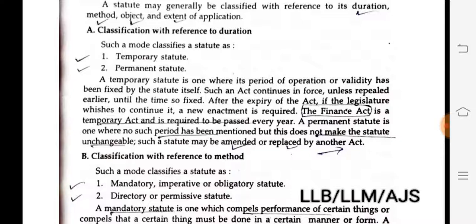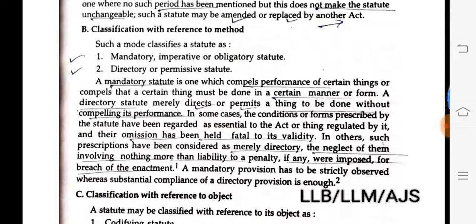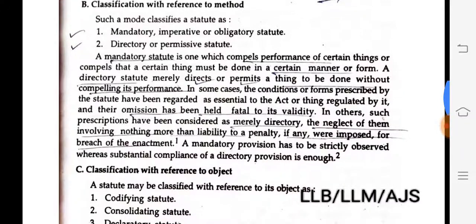Then B — classification with reference to method. A statute may be classified as: one, mandatory, imperative, or obligatory statute; and two, directory or permissive statute.